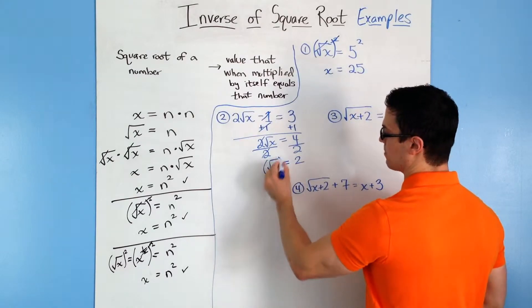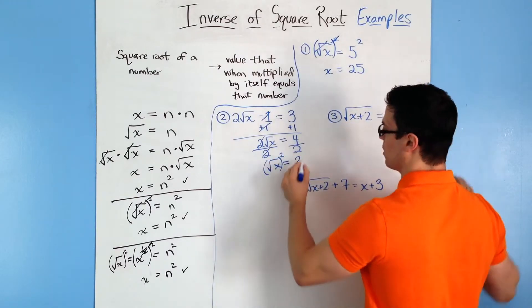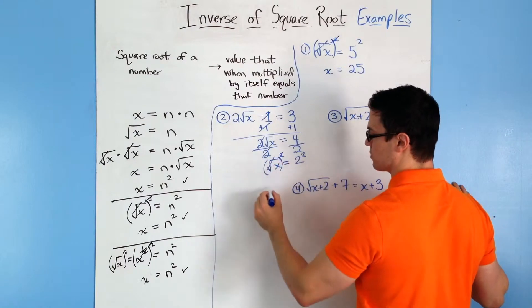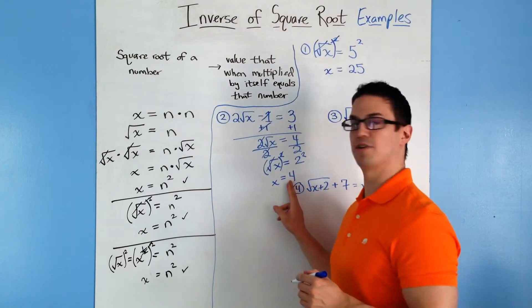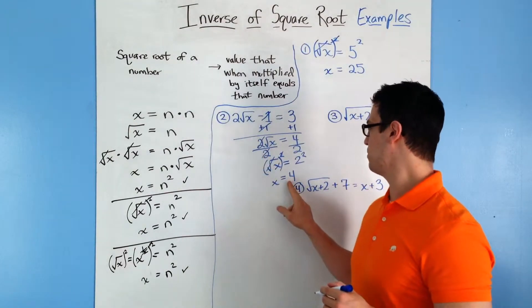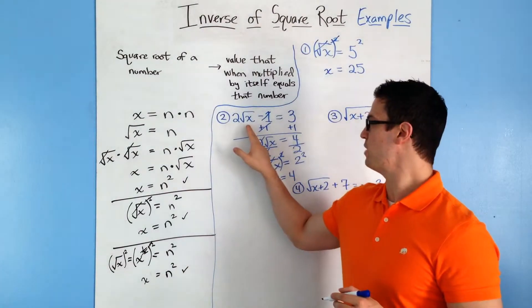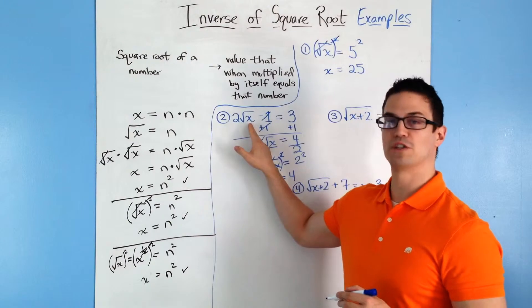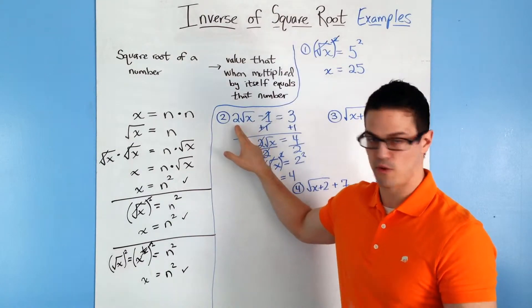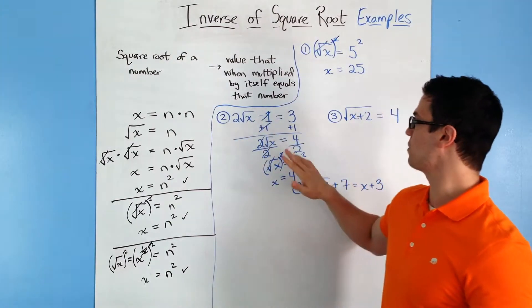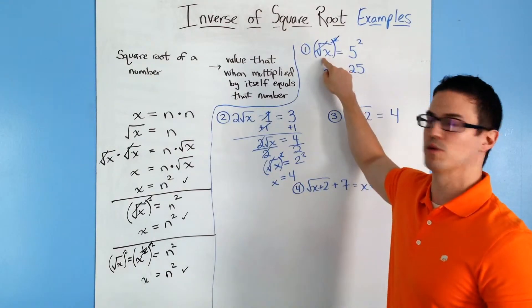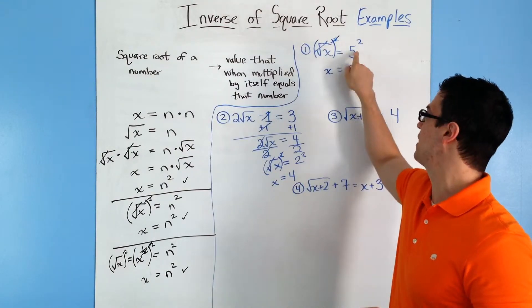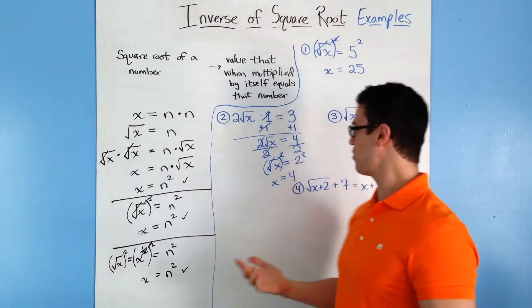You end up with the square root of x is equal to 2. Now we can square both sides just like number one. The squared and square root cancel, and you get x is equal to 4. A good thing to do is plug it back into the equation. If we put 4 in, the square root of 4 is 2, times 2 is 4, minus 1 is 3 — so that works. Same with number one: the square root of 25 is 5.